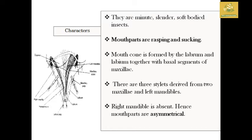The mouth part is rasping and sucking type, and it is cone-shaped. The labrum and labium form the basal segment of the maxilla, with a comb-like style. Two stylets are present: two maxillary stylets and one left mandible. The right mandible is absent, making the mouth part asymmetrical.